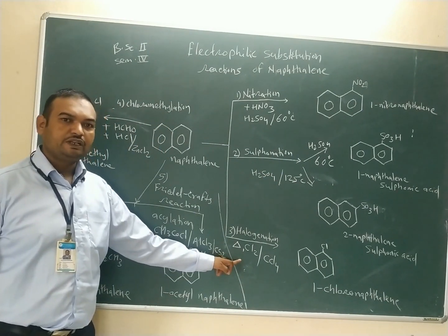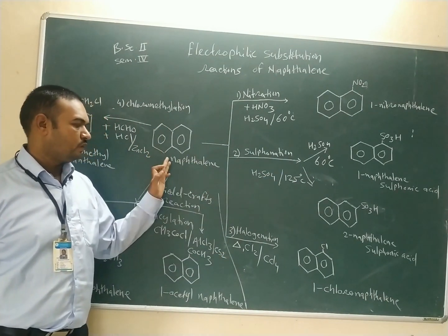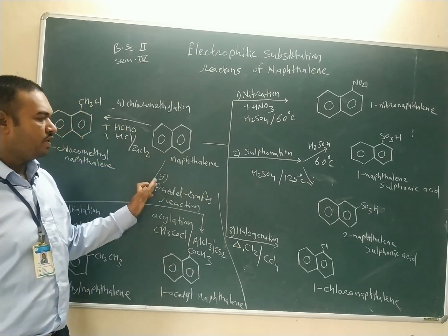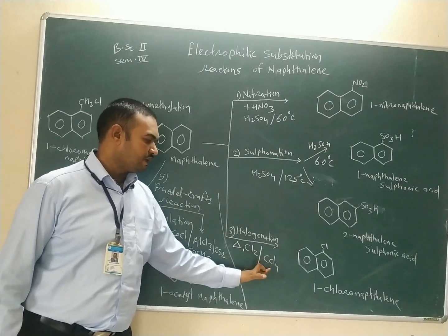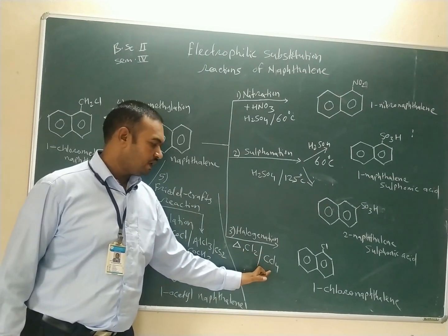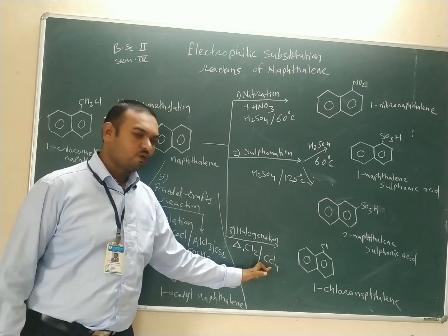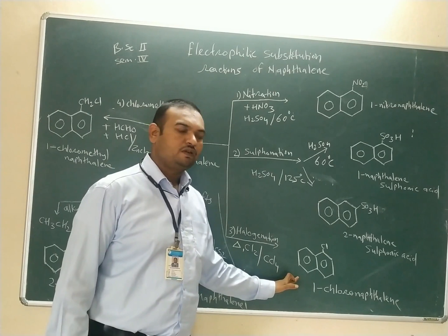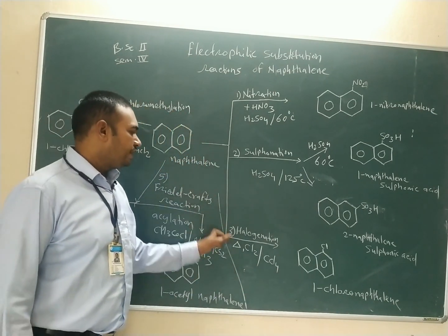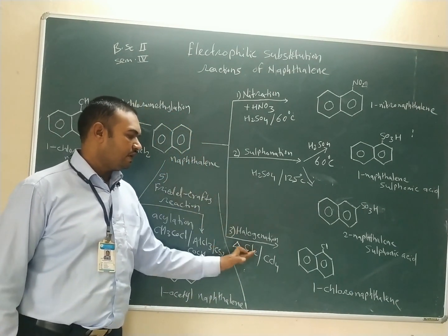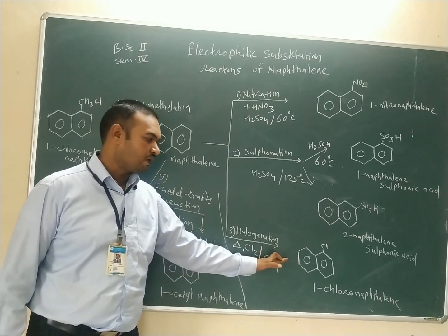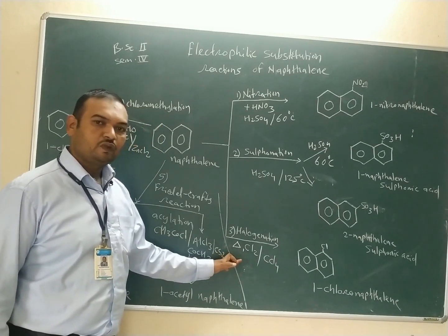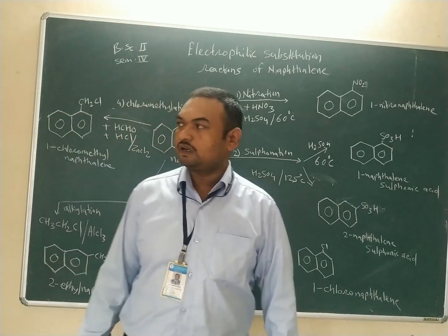Halogenation of naphthalene can also be carried out. For example, chlorination of naphthalene can be carried out in the presence of high temperature and in carbon tetrachloride (CCl4) medium to get 1-chloronaphthalene.